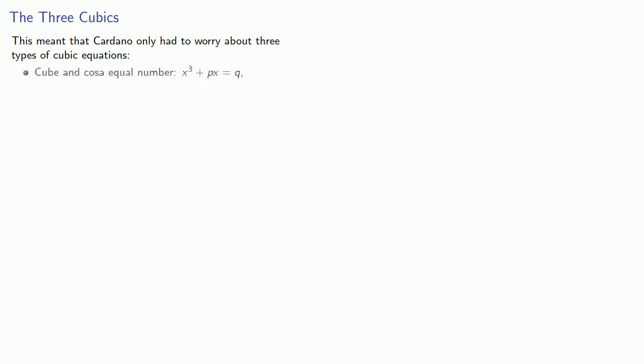This meant that Cardano only had to worry about three types of cubic equations: the cube and cosa equals number, x³ + px = q; the cube equals cosa and number, x³ = px + q; and the cube and number equals cosa, x³ + q = px.